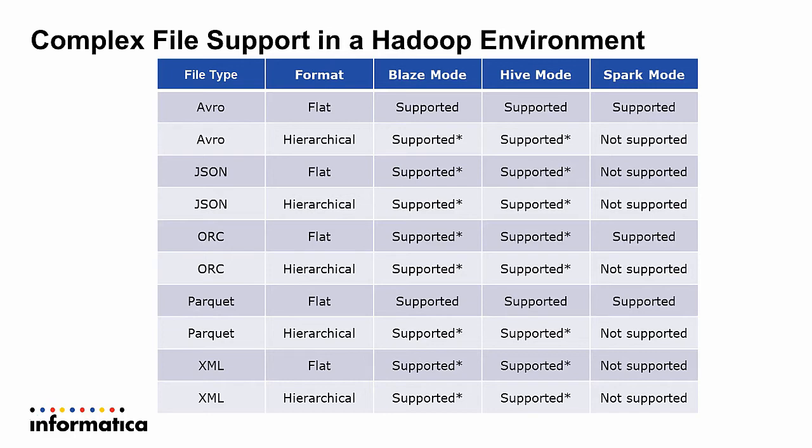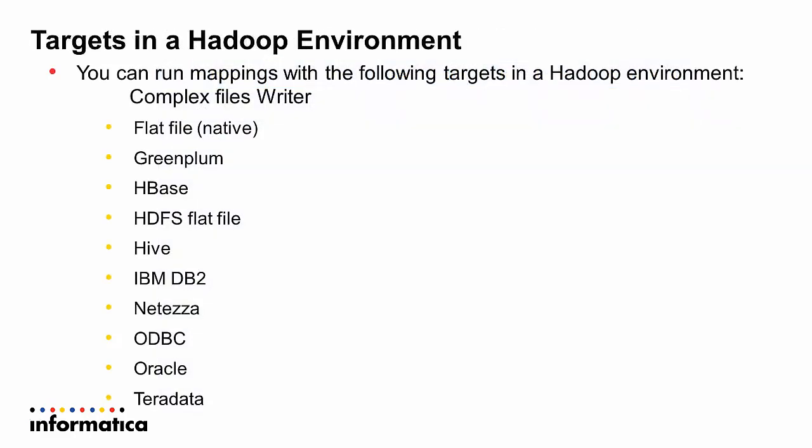For targets, the supported list mirrors the sources. This includes flat files, GreenPlum, Oracle, Teradata, Netezza — essentially the standard relational databases typically seen at customer sites — as well as HDFS and HBase, along with specific Hive targets and a complex file writer.